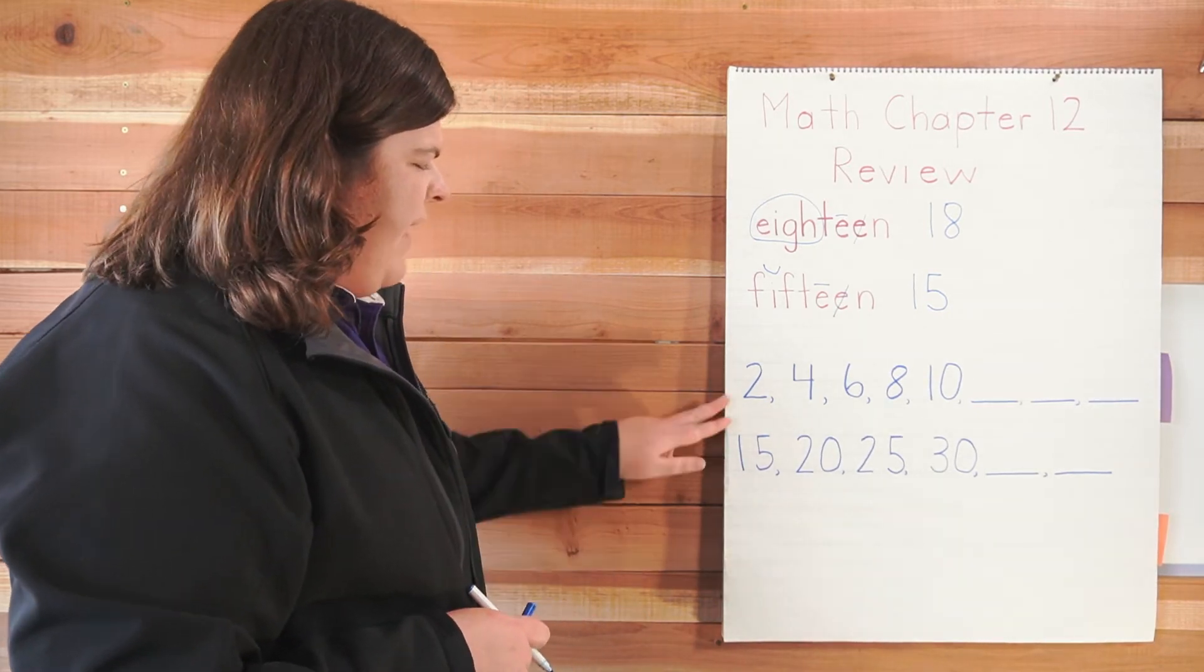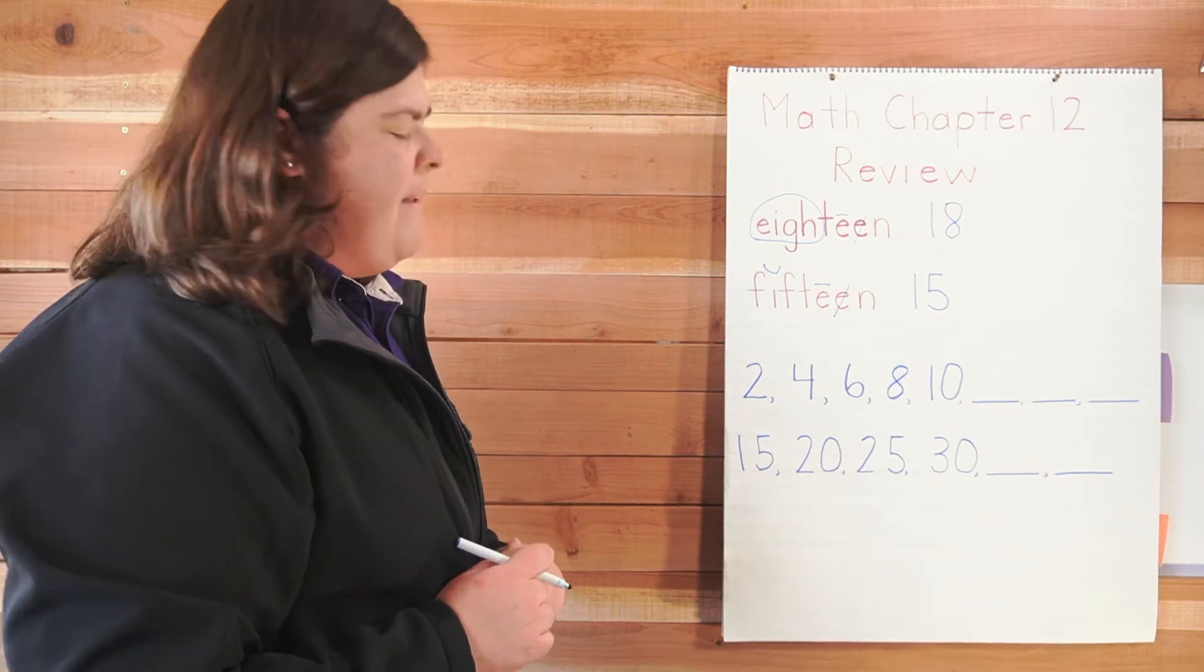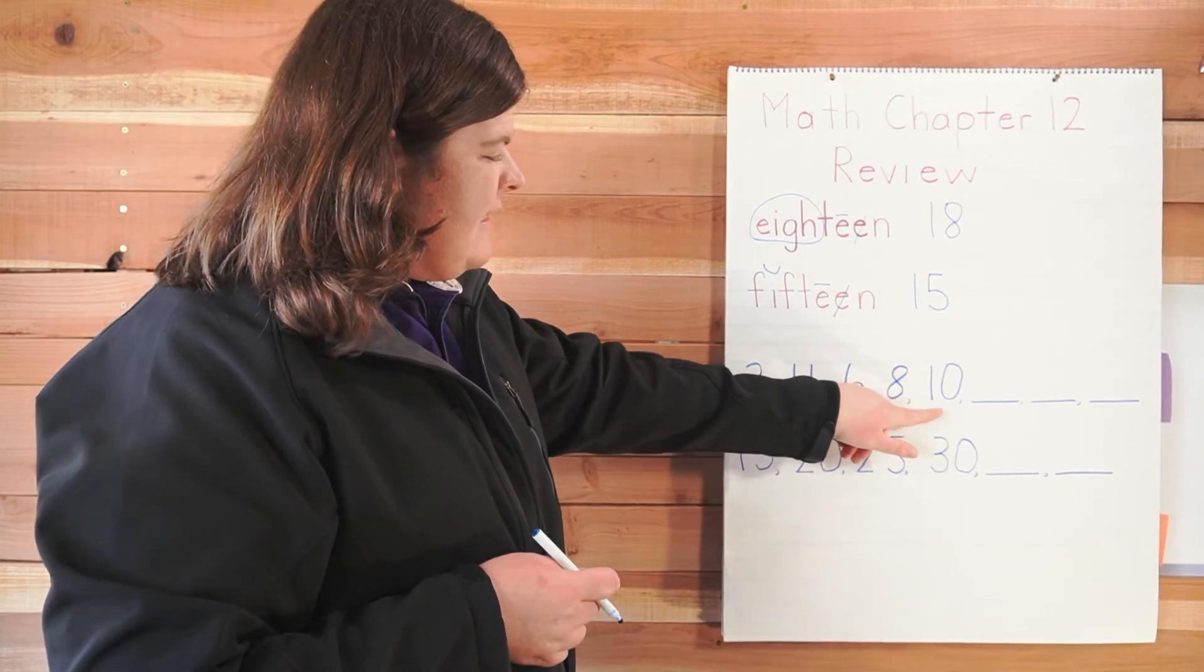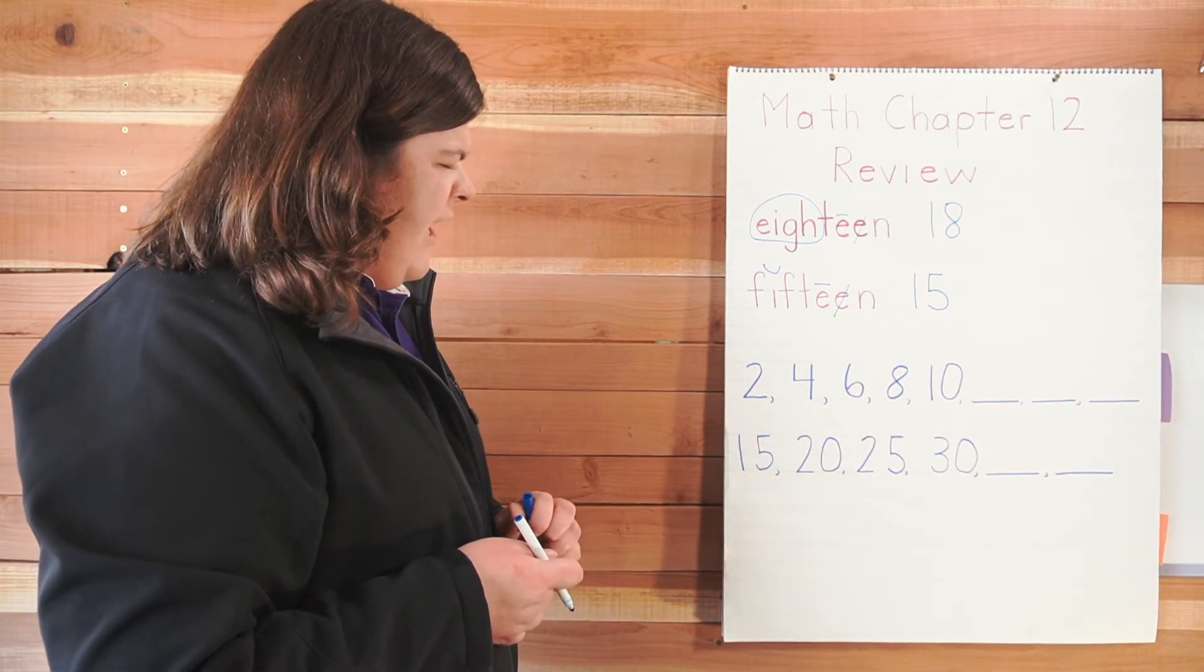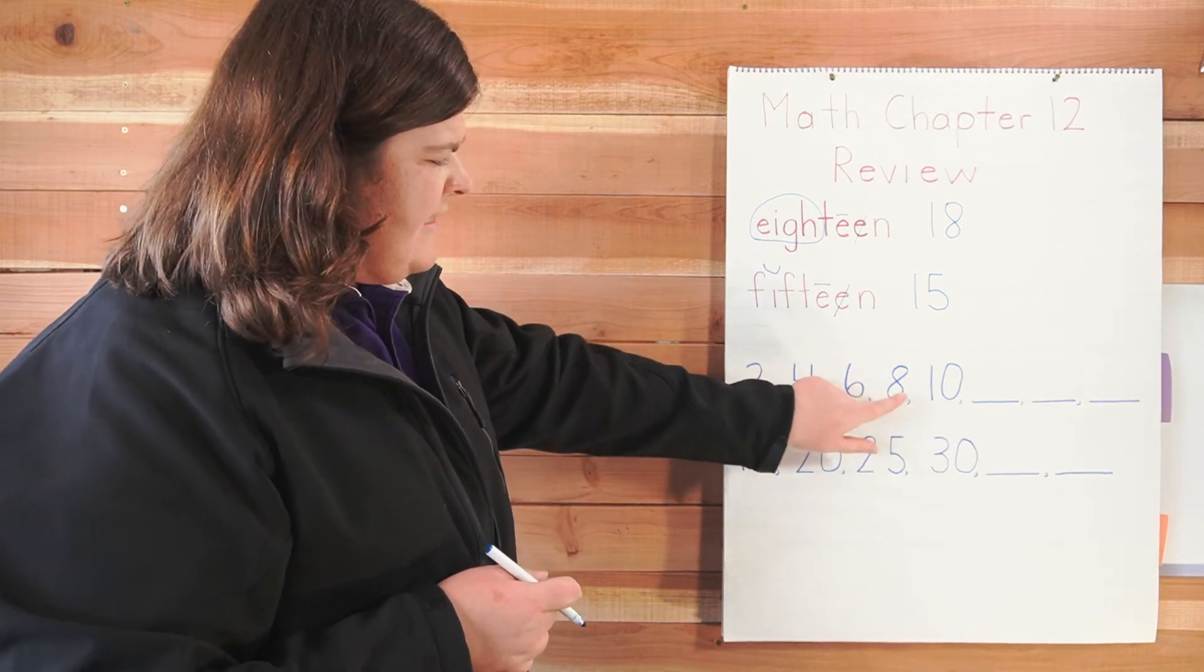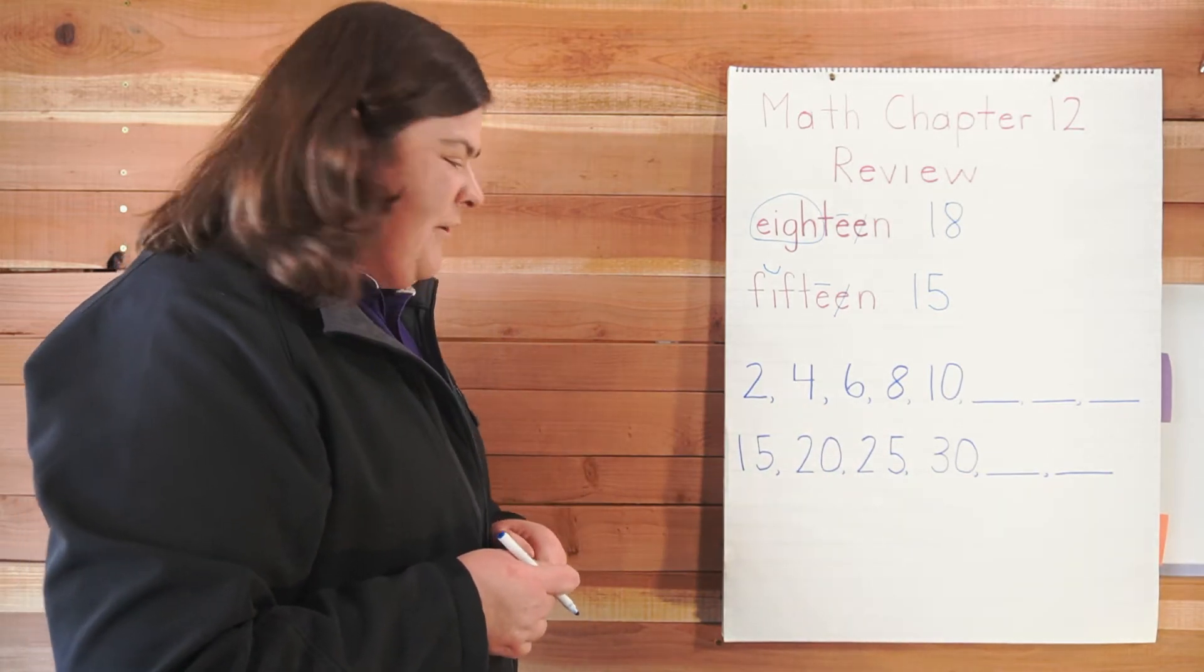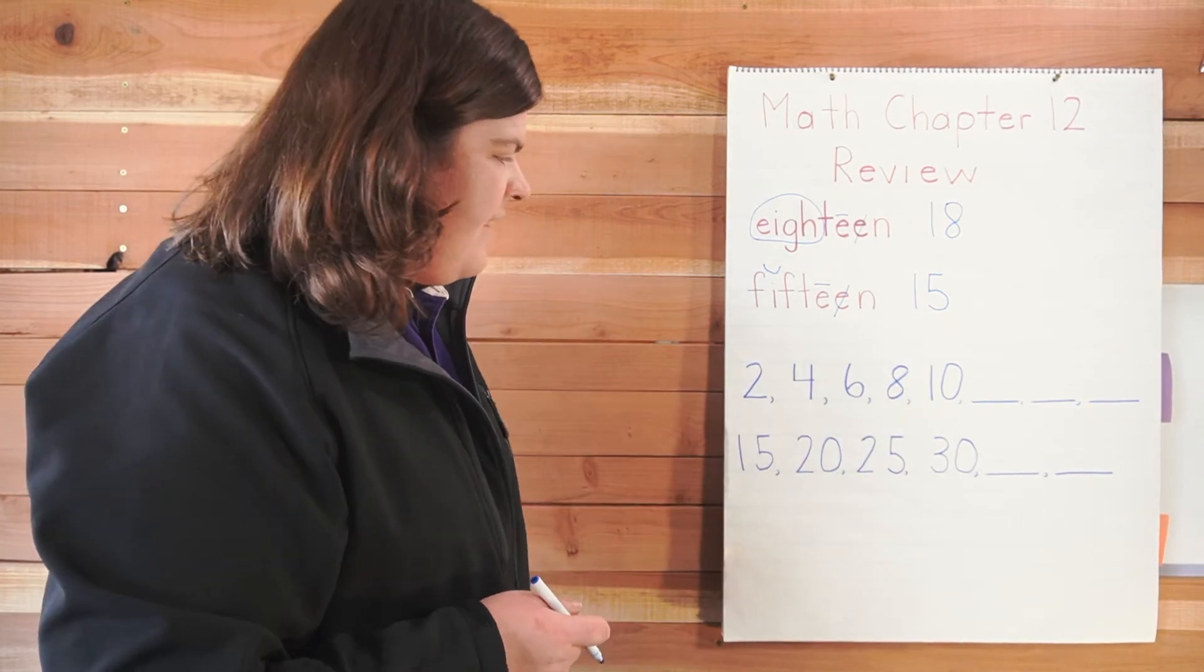Okay, let's look at some patterns next. Let's see if you can figure out my pattern. It says two, four, six, eight, ten. What am I counting by? I'm counting by twos. Two, four, six, eight, ten. What comes next?